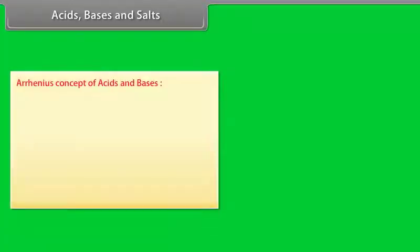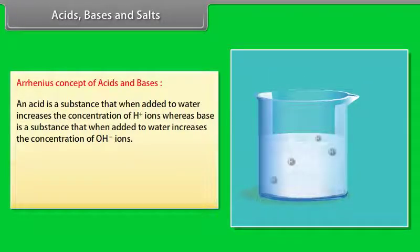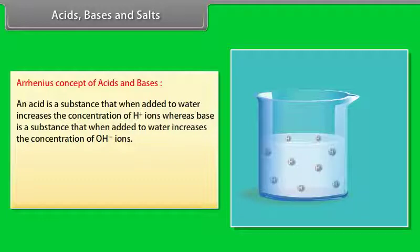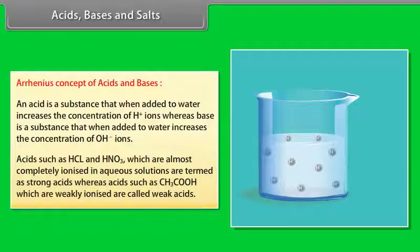Arrhenius concept of acids and bases: An acid is a substance that when added to water increases the concentration of H⁺ ions, whereas a base is a substance that when added to water increases the concentration of OH⁻ ions. Acids such as HCl and HNO₃ which are almost completely ionized in aqueous solutions are termed strong acids.